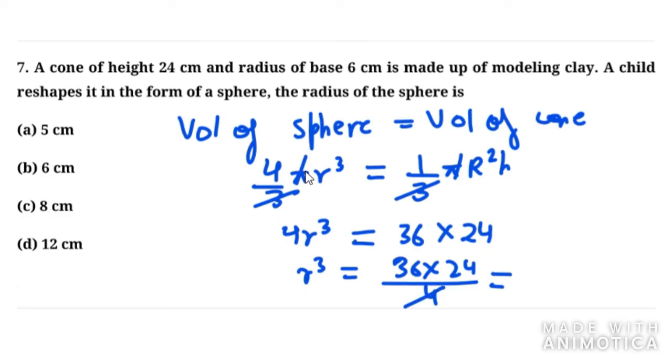Now 24 and 4 gets cancelled out with 6, and 36 into 6 is 216. And for 216 we can write it as 6 cube. So cube and cube gets cancelled out and we are left with 6 centimeter. That means radius of sphere is 6 centimeter.